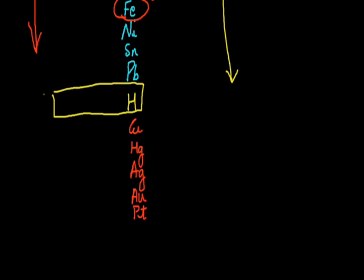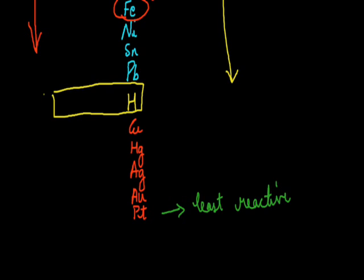The metals placed below hydrogen in the reactivity series — copper, mercury, silver, gold and platinum — platinum is least reactive. It will be the last metal to react with other metals; it is highly non-reactive. That is why we find lumps of gold in nature. Most metals occur in the form of compounds, but gold, silver and platinum do not. From this comparative term, we can see the order of their reactivities — which metal is most reactive and which is least.